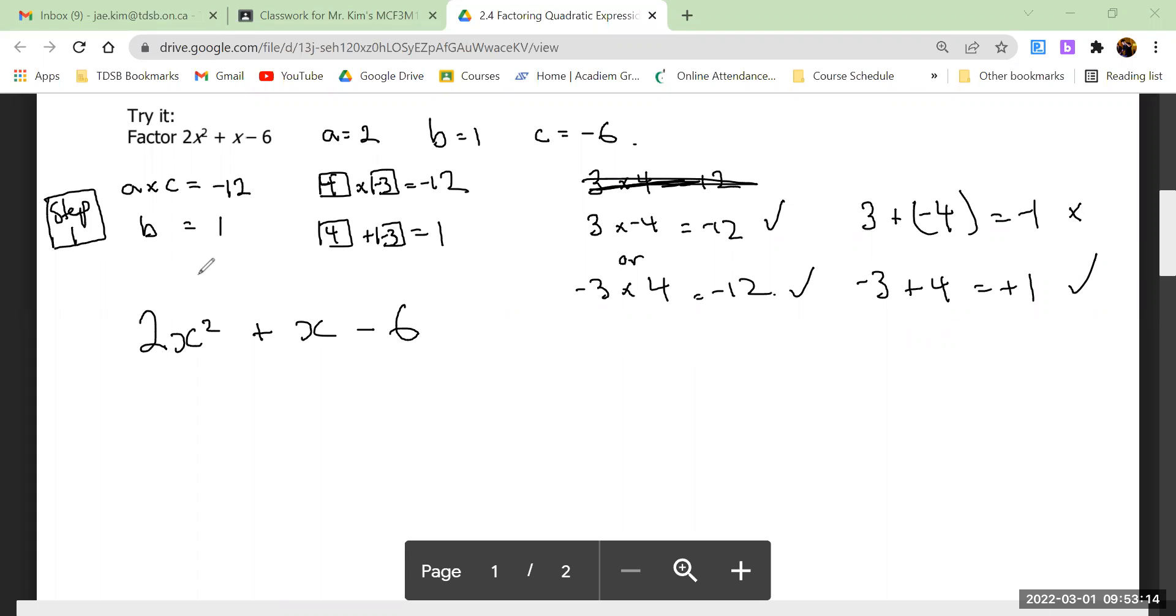Do you think you can do that by yourself - find two numbers that multiply to a times c but still adds to b? It might take some time but do you think you can do that? That's step one.